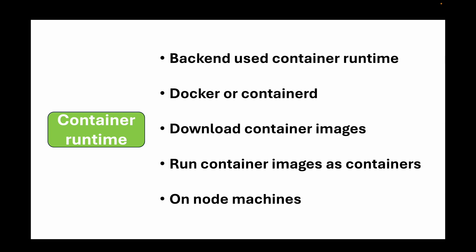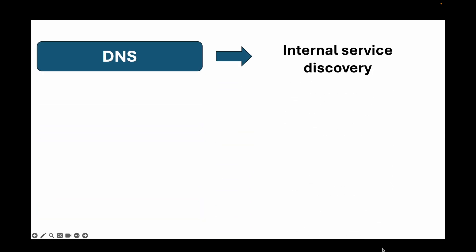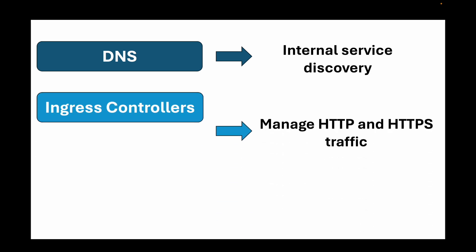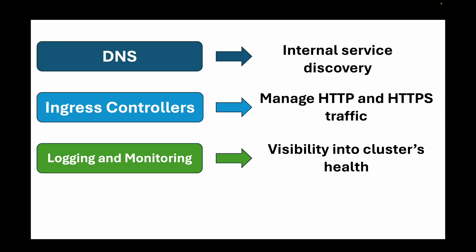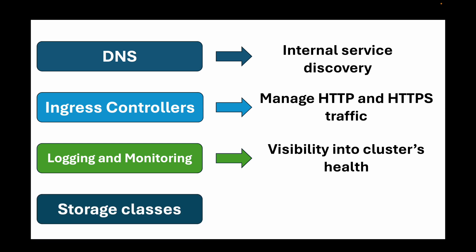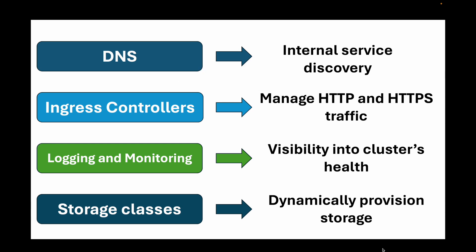In addition to these core components, there are some more components generally used to enhance Kubernetes functionality. We have DNS for internal service discovery, ingress controllers to manage HTTP and HTTPS traffic, logging and monitoring tools like Prometheus and Grafana to provide visibility into cluster health, and storage classes which can be used to provision storage dynamically for your applications.